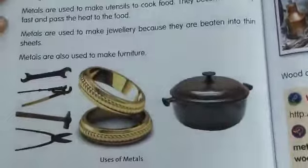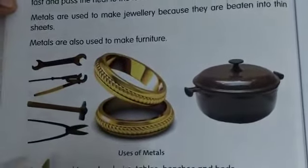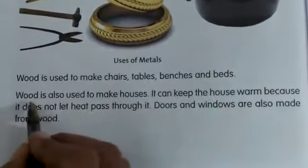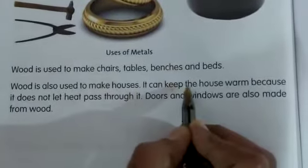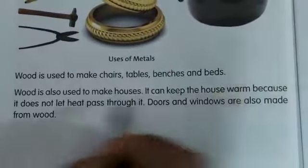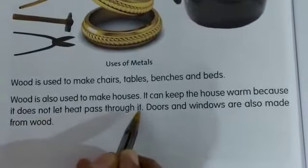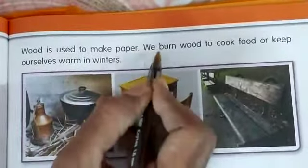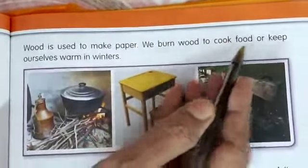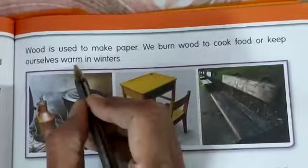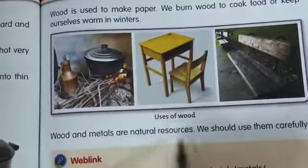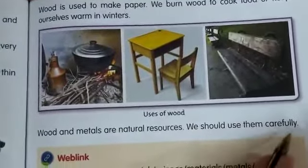Here, they gave some objects, children — these are the things we can make with metals. Wood is used to make chairs, tables, benches, and beds. Wood is also used to make houses — it can keep the house warm because it does not let the heat pass through it. Doors and windows are also made from wood. Wood is used to make paper. We burn wood to cook food or keep ourselves warm in winter. Wood and metal are natural resources — we should use them carefully.